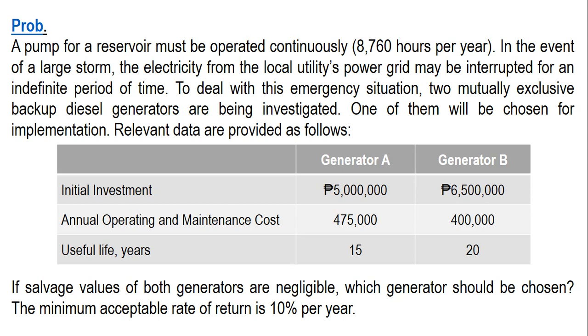In the event of a large storm, the electricity from the local utility's power grid may be interrupted for an indefinite period of time. To deal with this emergency situation, two mutually exclusive backup diesel generators are being investigated. One of them will be chosen for implementation.